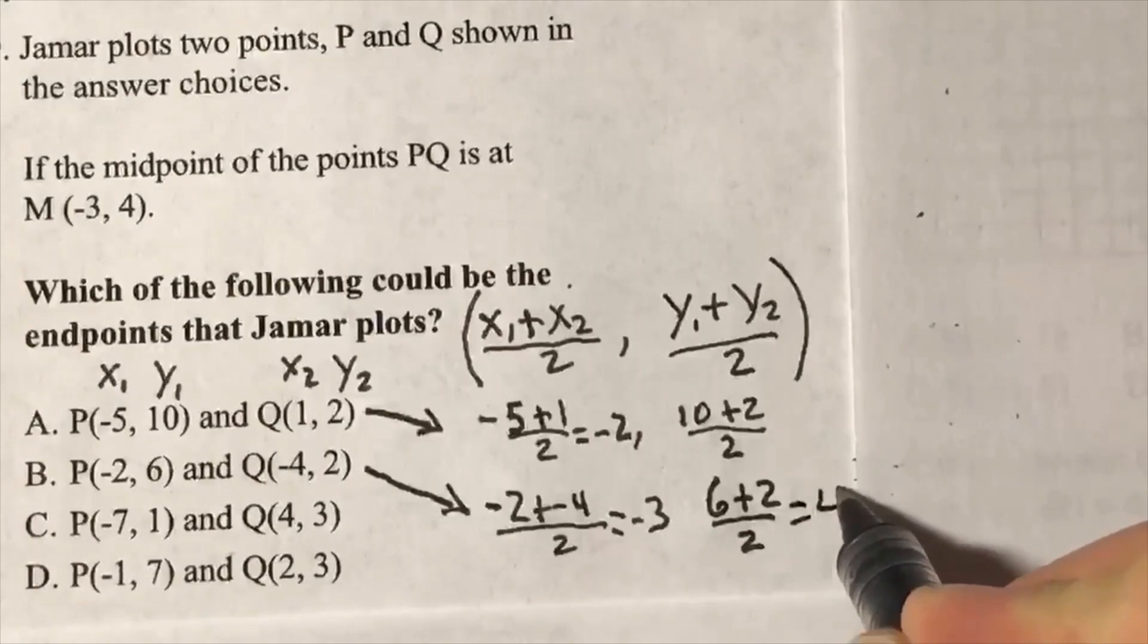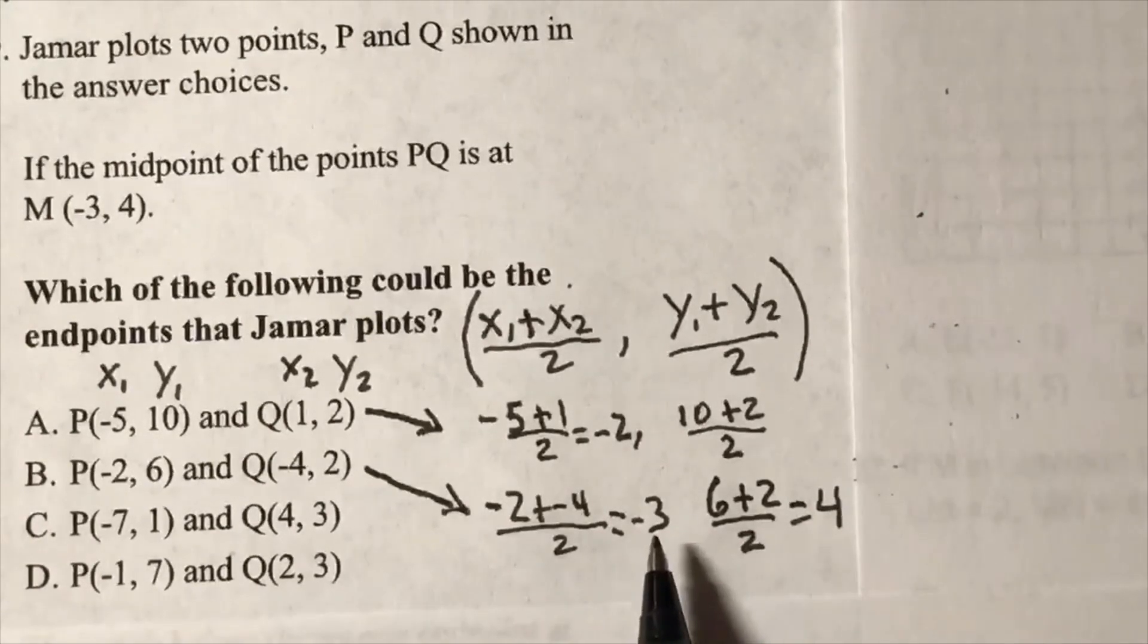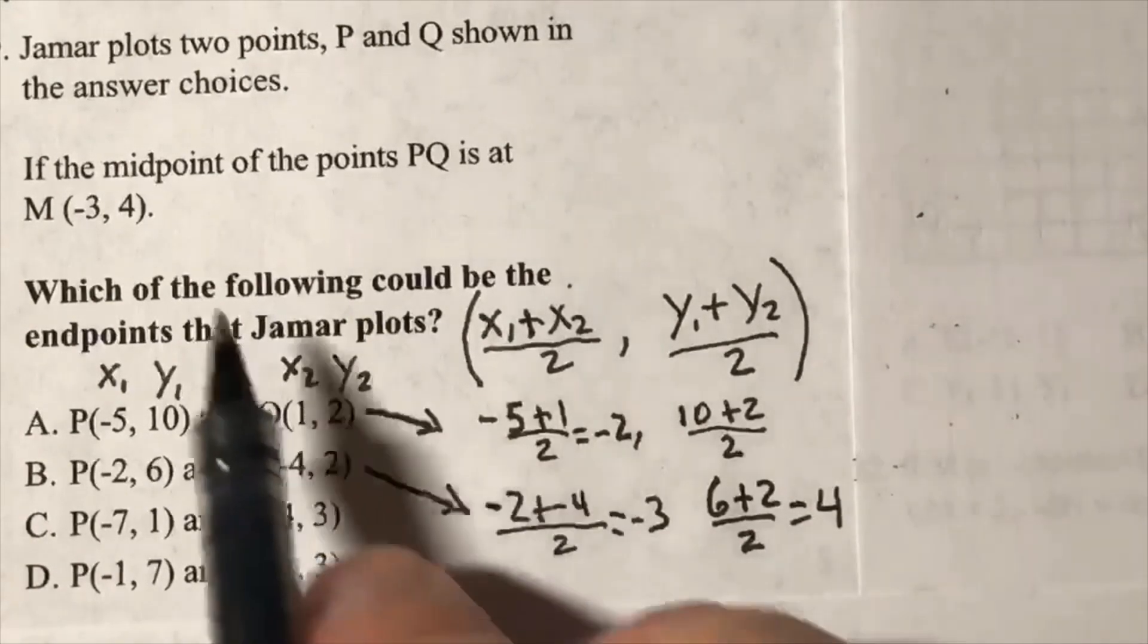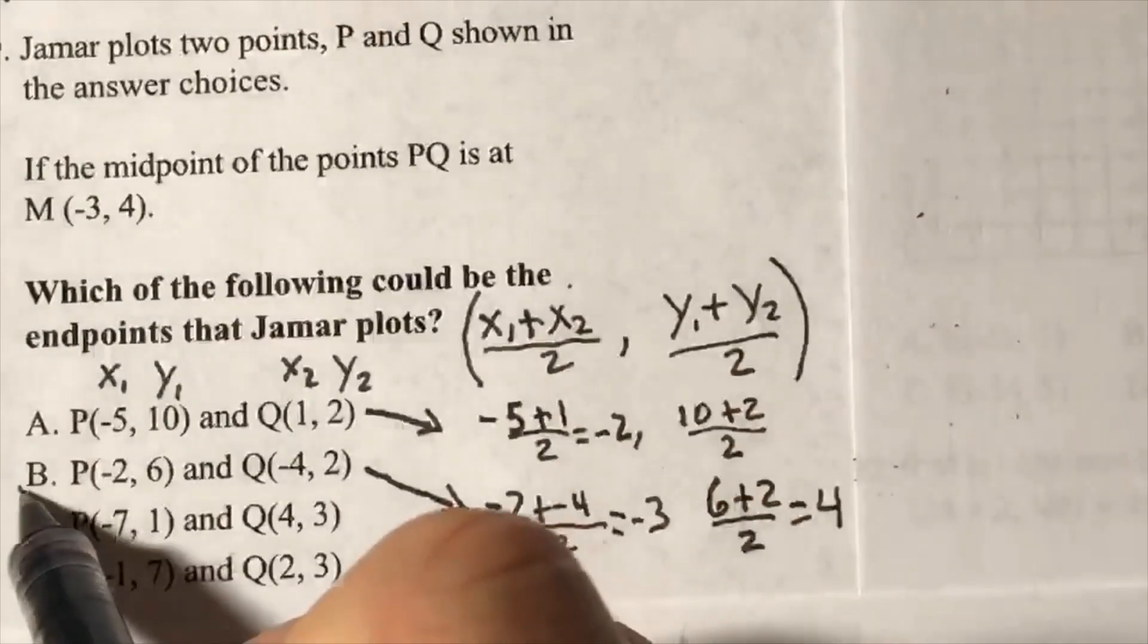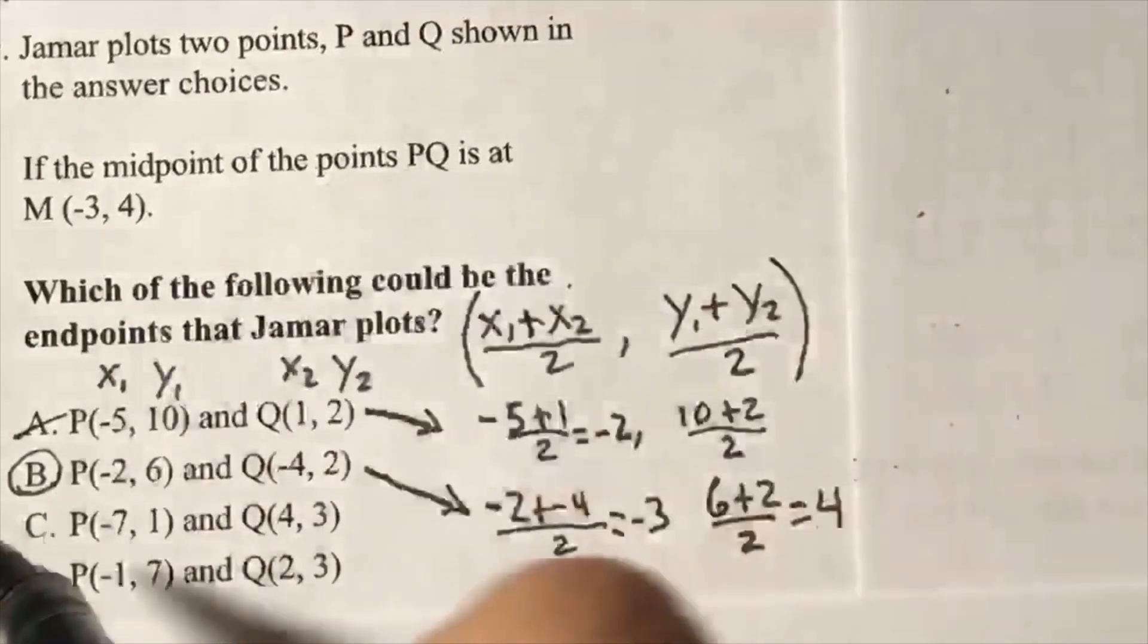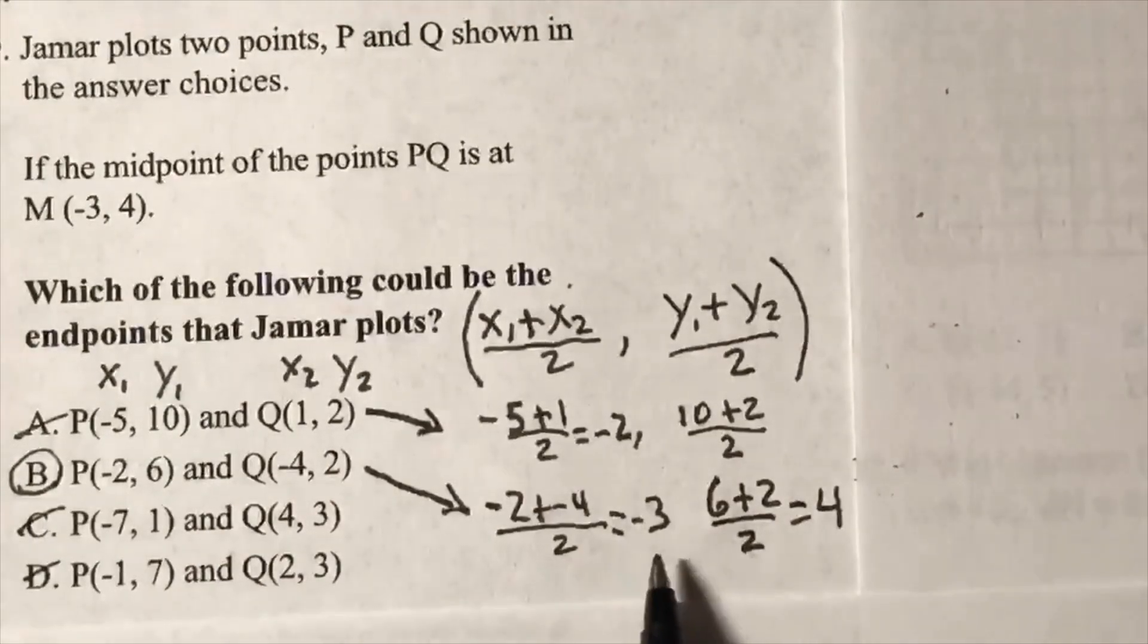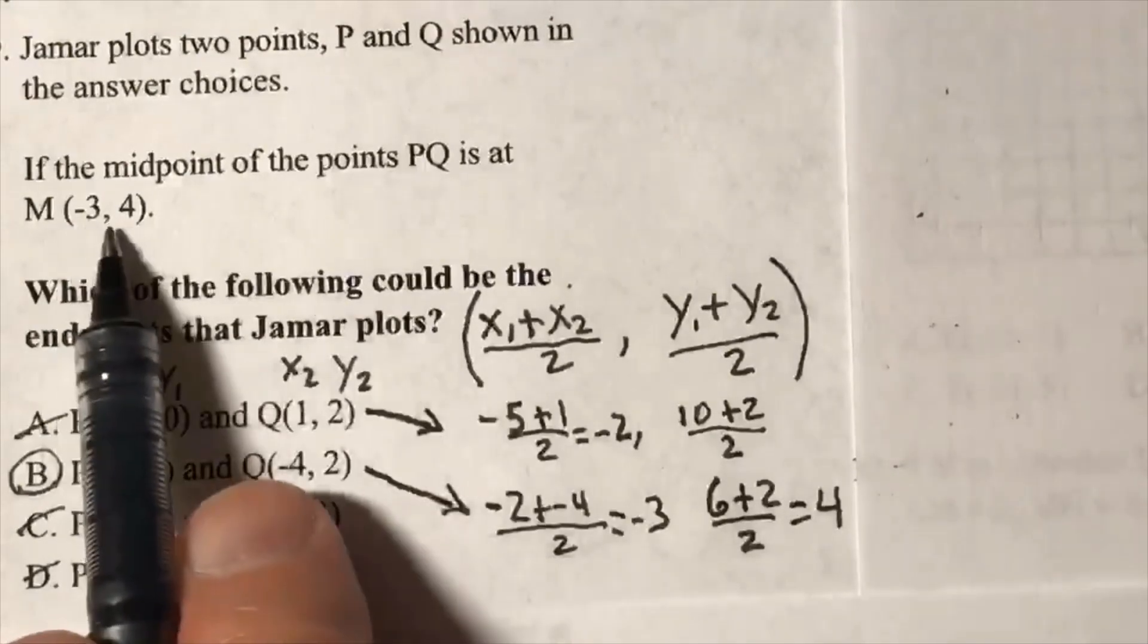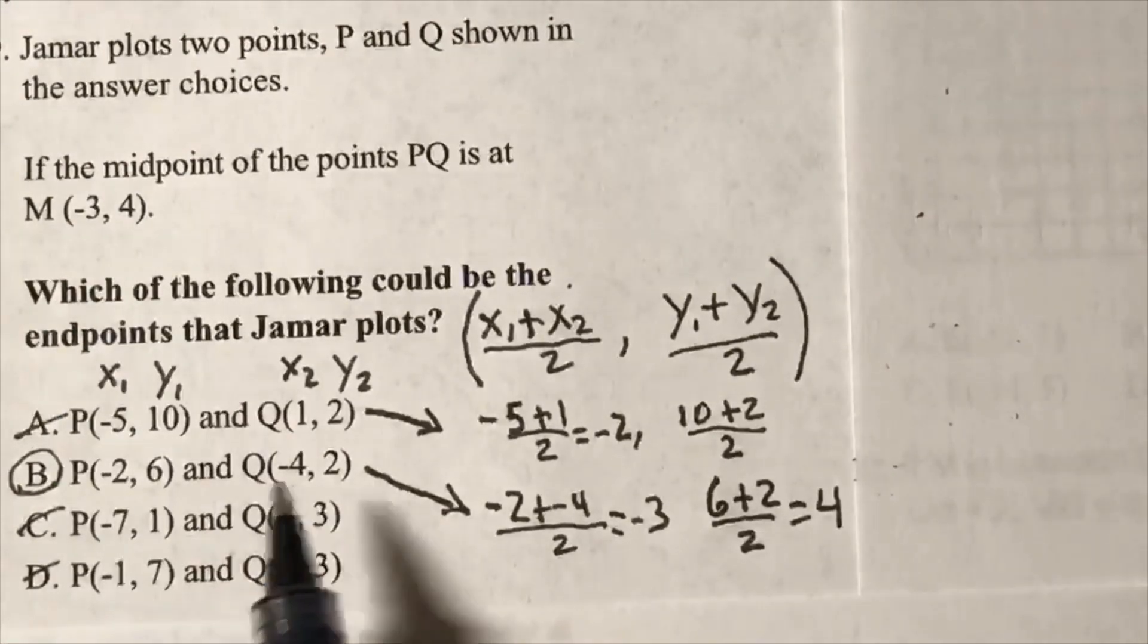We can stop right here. So the answer to this question is B. We can scratch out A, C, and D, because we know we found the midpoint using these two points.